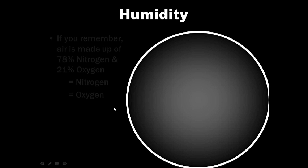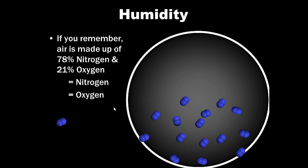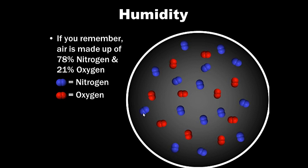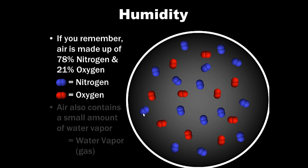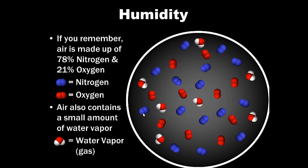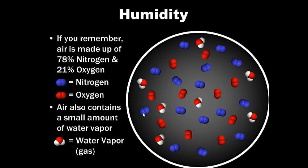Humidity. If you remember from our unit on atmosphere and wind, air is made up of 78% nitrogen and 21% oxygen. We have all these nitrogen molecules and oxygen molecules floating around in our air. But there's other stuff in our air. Air also contains a small amount of water vapor. Water as a gas. We call that water vapor - water as a gas, not a liquid or ice.